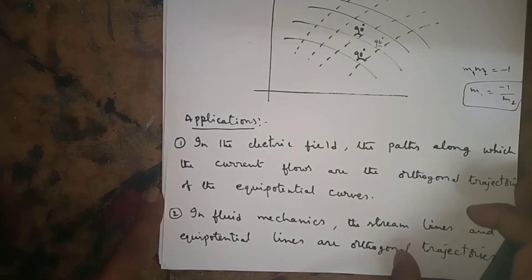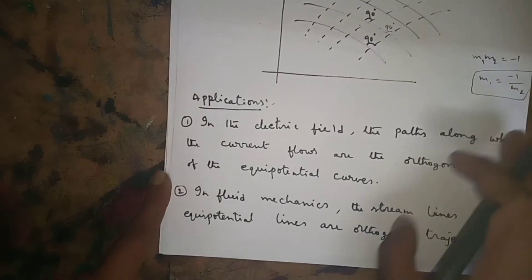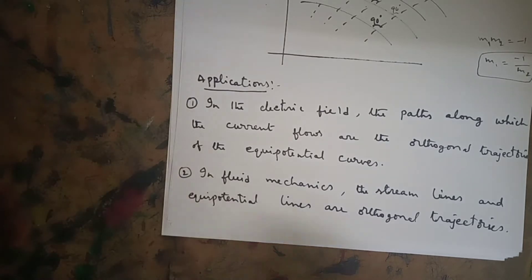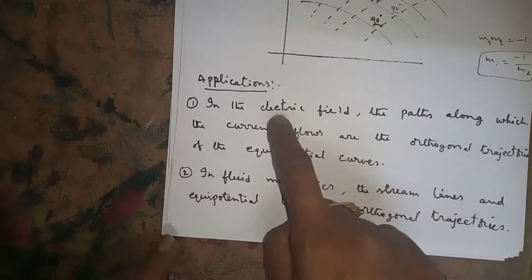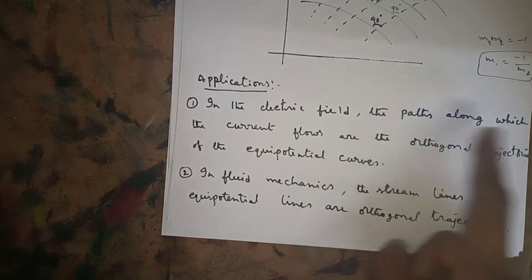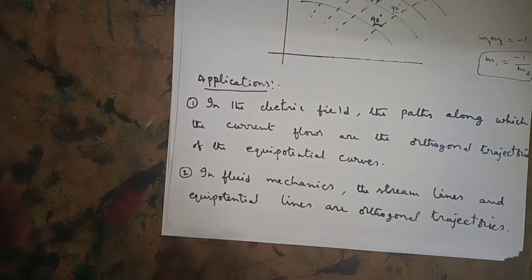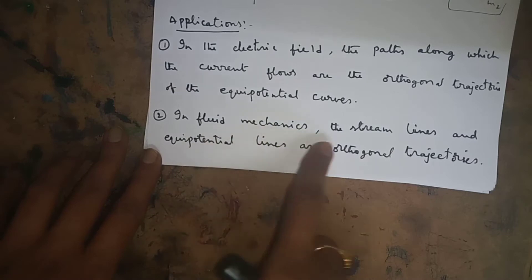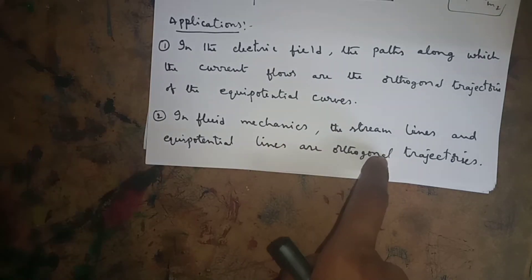Now let's look at the applications of orthogonal trajectories. In electric fields, the paths along which current flows are orthogonal trajectories of equipotential curves — each curve cuts every member of another curve at right angle. Another application is in fluid mechanics, where streamlines and equipotential lines are orthogonal trajectories of each other.